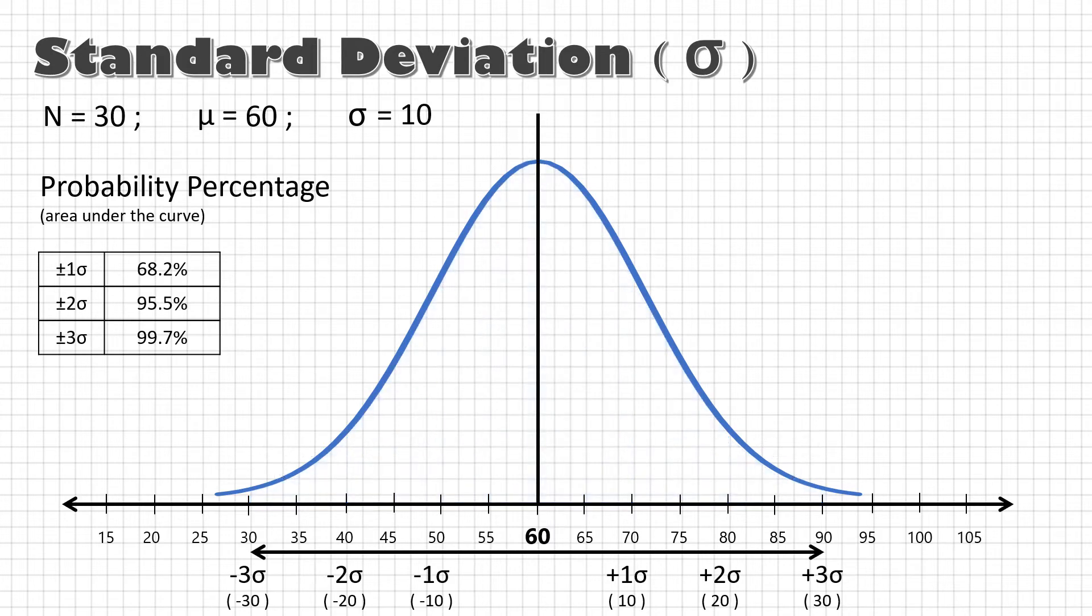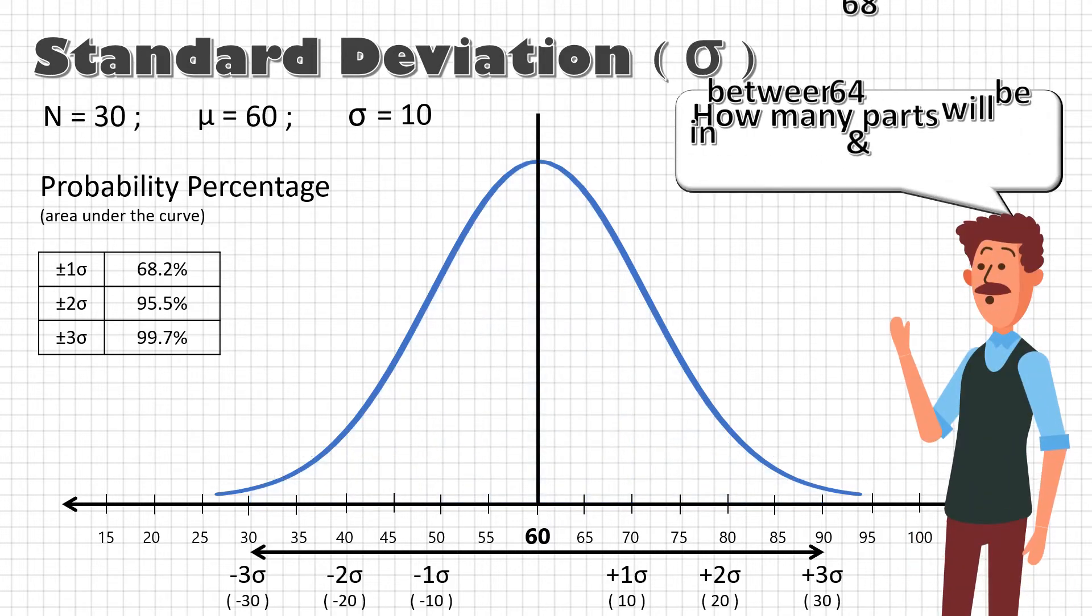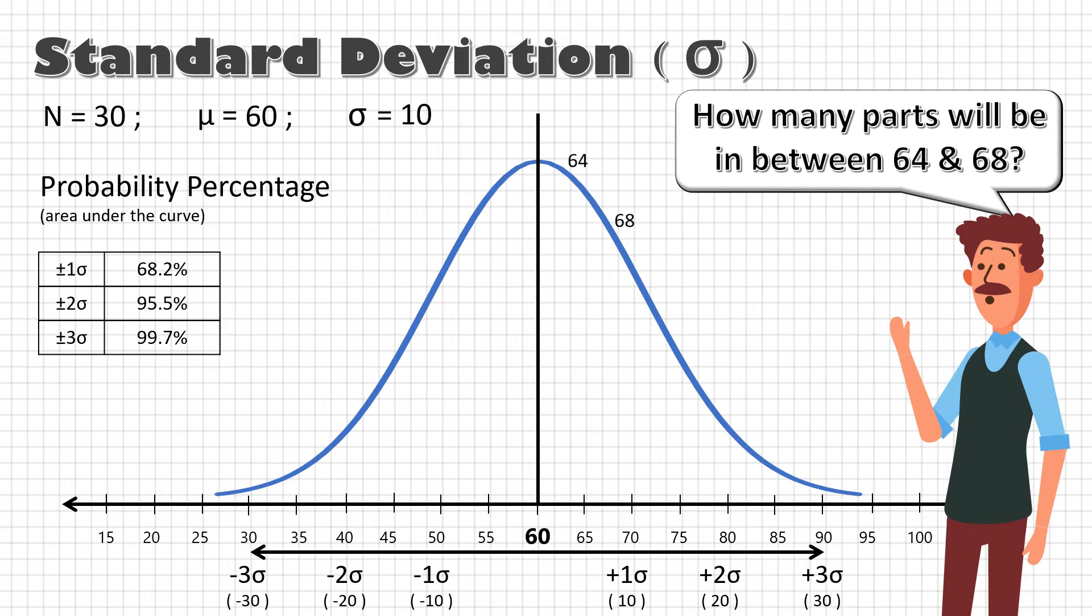Similarly, if I want to know what is the probability of making parts between 64 and 68, it will be equal to the area of this portion. This is amazing. With the help of just 30 parts, we have predicted the behavior of the process.